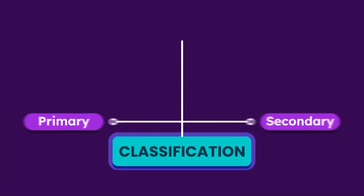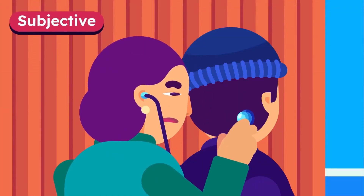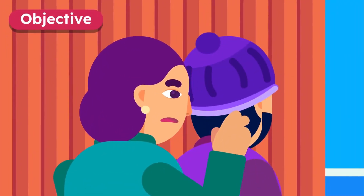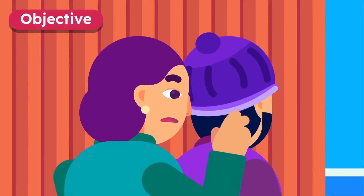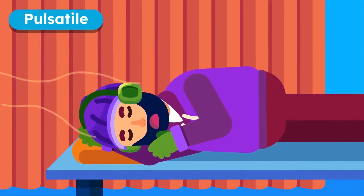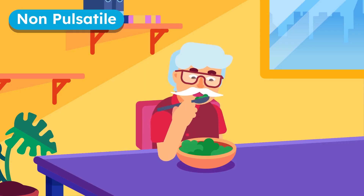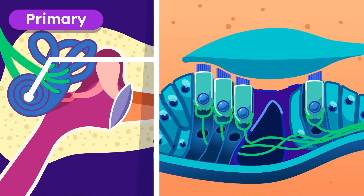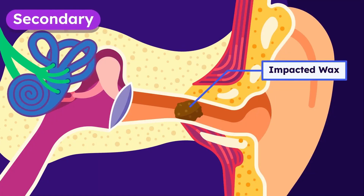Classification: tinnitus may have these characteristics. Subjective — when only the patient can hear it. Objective — when the sound may be heard by another person. Pulsatile — when the sound follows a steady pattern. Non-pulsatile — when it appears randomly. Primary tinnitus is caused by hearing loss, while secondary tinnitus has a specific known cause.